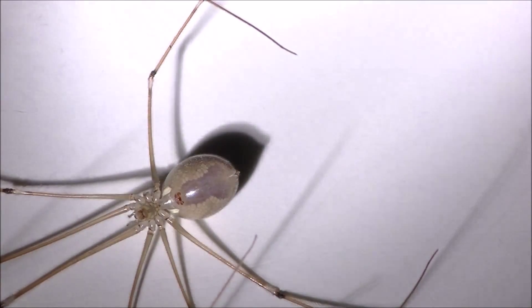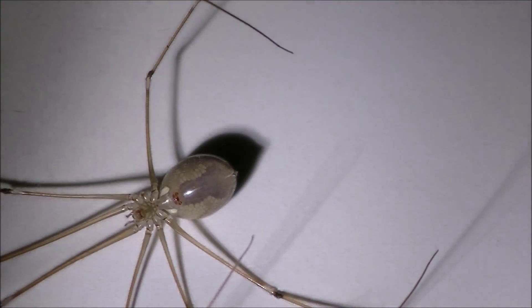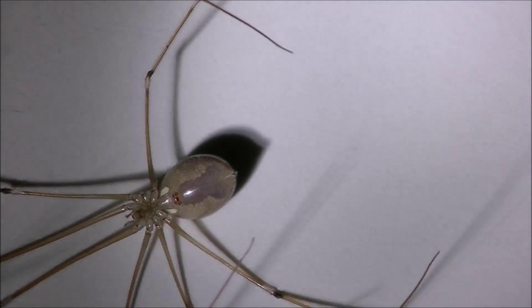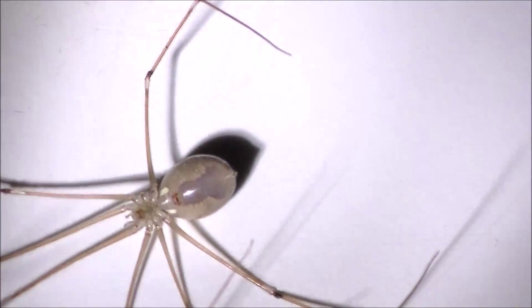There you go, there's a real good shot of the violin pattern. Seems to have a little orange spot at the base where the strings would be. So that is a brown recluse, ladies and gentlemen.